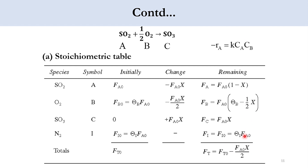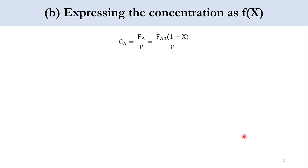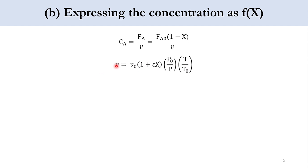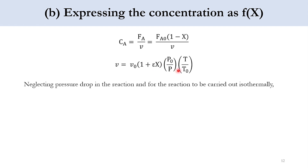Now expressing concentration as a function of conversion — our second task. CA = FA / v, where F is molar flow rate and v is volumetric flow rate. FA at the outlet equals FA₀(1 − X)/v. For a gas phase system, v = v₀(1 + ε·X)(P₀/P)(T/T₀), as derived previously. Since there is no pressure drop and temperature is constant, T/T₀ and P₀/P both cancel, leaving v = v₀(1 + ε·X).